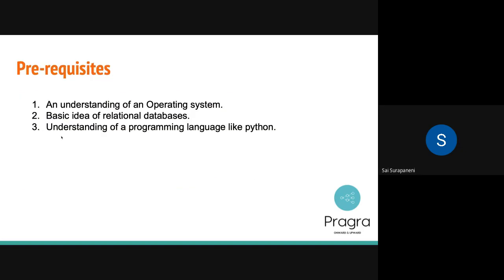Prerequisites: you need an understanding of an operating system. A basic idea of relational databases is quite important. Understanding of a programming language like Python is not really important right now, but you'll for sure need it in the future because I'll be teaching you something called Airflow. I can give you good resources for all these three at the end of this lecture, so you can ping me if you want some nice resources.